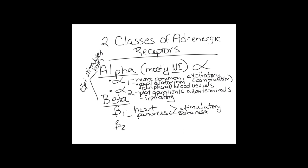Beta-1 receptors are found on the heart and pancreas. They're stimulatory on the heart — causing increased heart rate and contractility — but inhibitory on the pancreatic beta cells, stopping insulin secretion. Beta-2 receptors are found on the lungs, GI tract sphincters, bladder, and uterus.